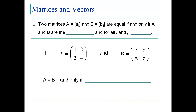Two matrices A = [A_ij] and B = [B_ij] are equal if and only if A and B are of the same order and for all i, j, A_ij equals B_ij. For example, if A equals the matrix [1, 2; 3, 4] and B equals [X, Y; W, Z], then for A to equal B we need X=1, Y=2, W=3, and Z=4.